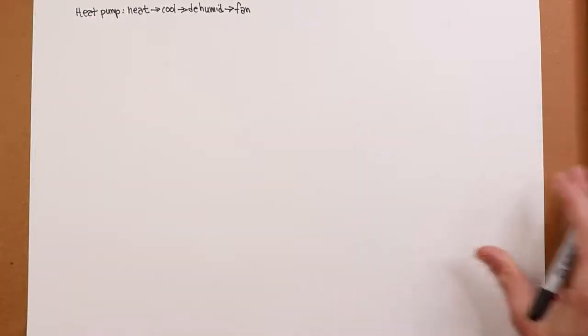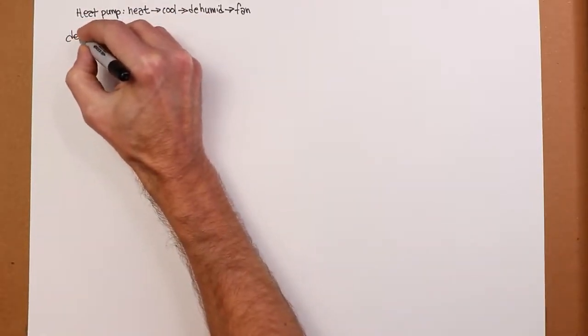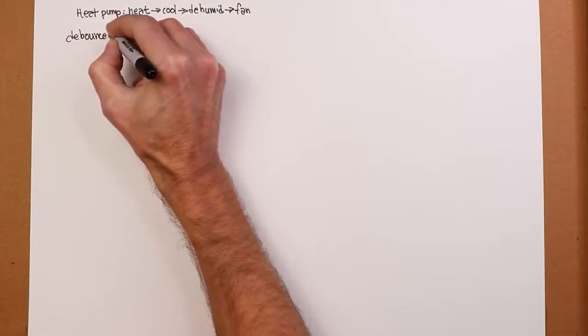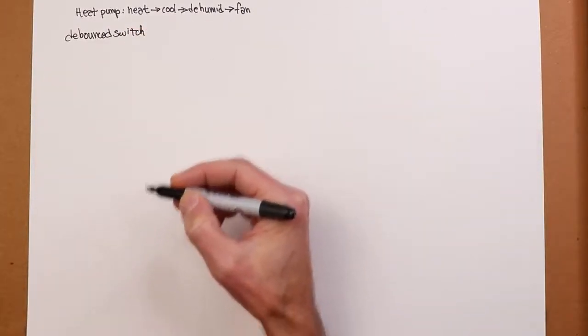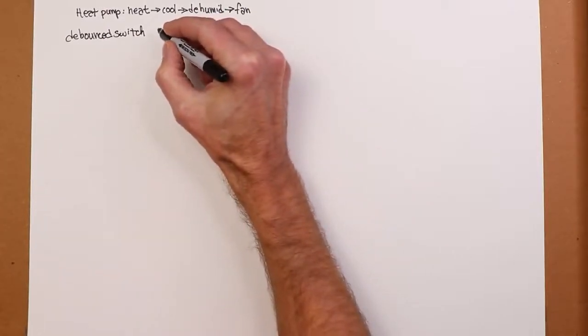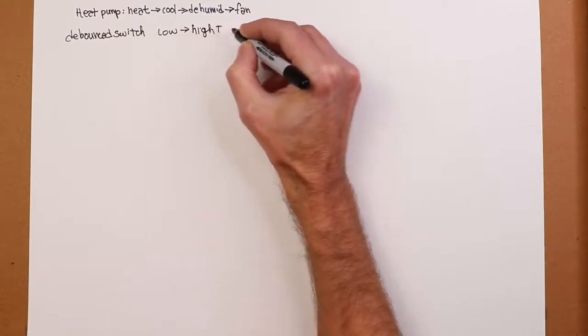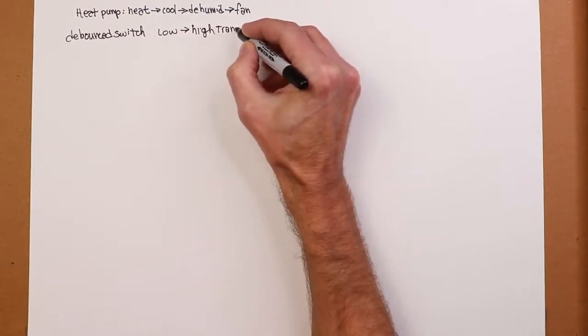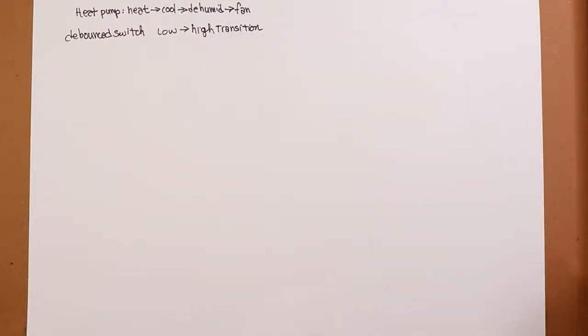Now, what we're going to look at here as far as code is going to assume that we have a debounced switch. I'm not going to worry about that. And secondly, for no particular reason, we're also going to say that we're looking at a low-to-high transition. You could code this in the opposite way, but I'm just going to use low to high, just for fun.